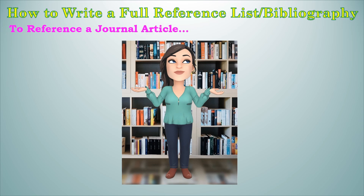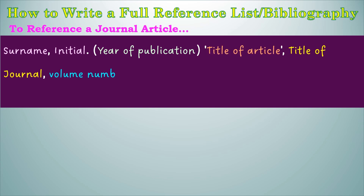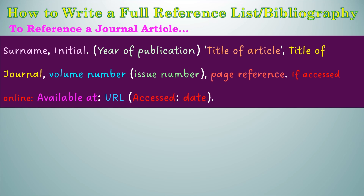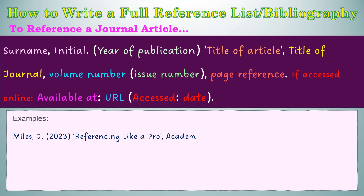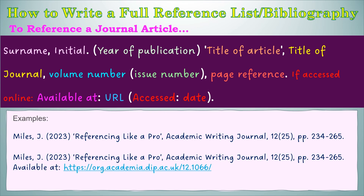To reference a journal article you will need: the surname, comma, initial, full stop, open brackets year of publication, close brackets, open quotations, title of the article, close quotations, comma, then the title of the journal, comma, volume number, and in brackets the issue number, comma, page reference, full stop. If accessed online, you also need the words 'Available at:' then the URL, open brackets 'Accessed:' and then the date you accessed it, close brackets, full stop. Here is an example — the first is a paper-based journal and the second is a journal found online.